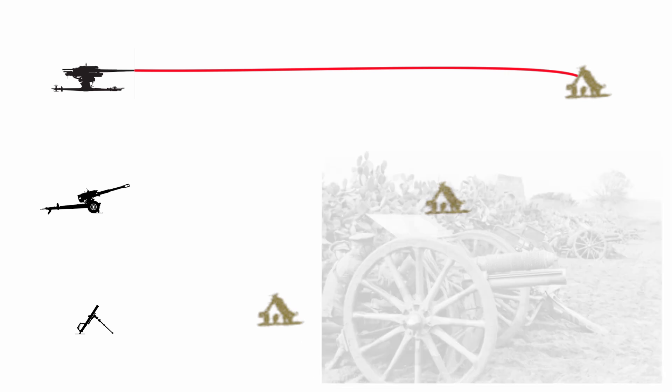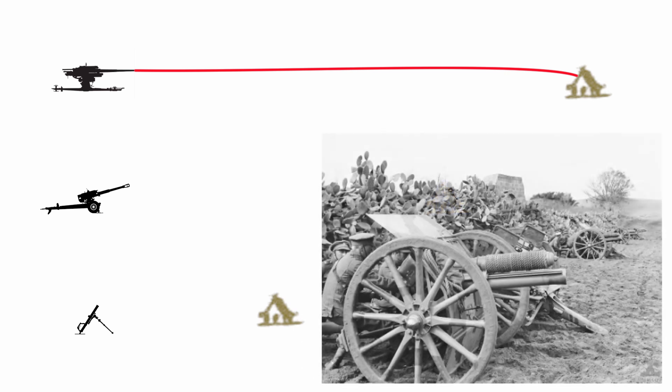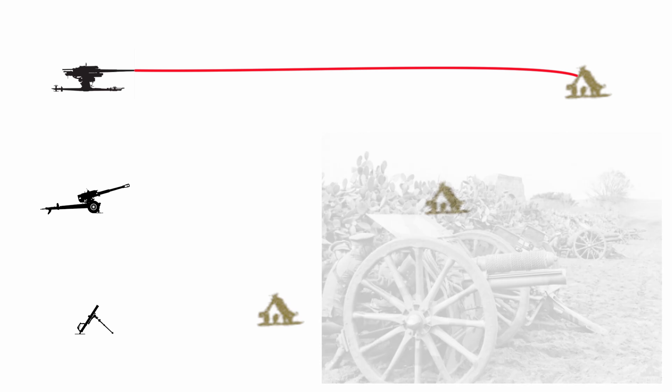British field guns, up to and through the Great War, were designed with a maximum elevation of no more than 20 degrees normally. This means that the shell remains close to the ground when it's fired, as seen in the diagram on the screen.